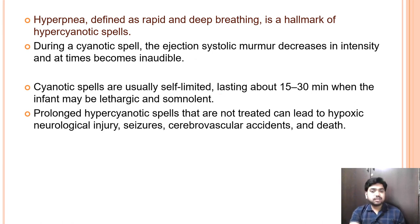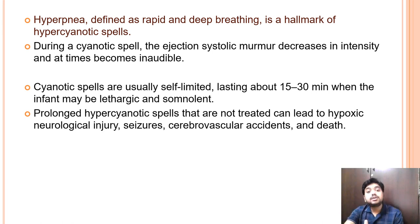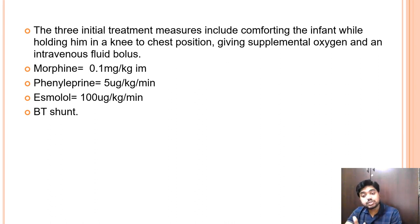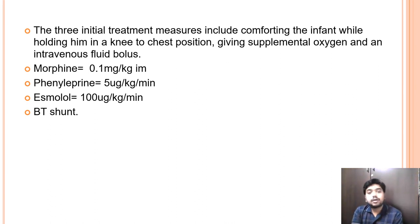Cyanotic spells are usually self-limiting, lasting about 15 to 30 minutes. Infants may become lethargic, somnolent, unconscious, or unresponsive. Prolonged hypercyanotic spells that are not treated can lead to hypoxic neurological injuries, seizures, cerebrovascular accidents, and death. Completely desaturated blood reaching the brain causes hypoxic injury, and the cyanotic spell may turn into a seizure, ultimately leading to death.